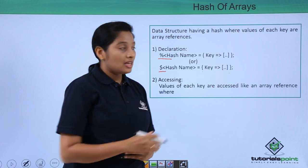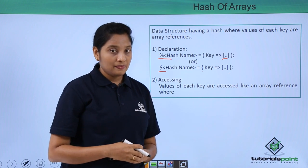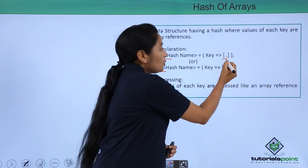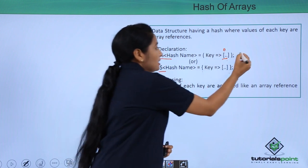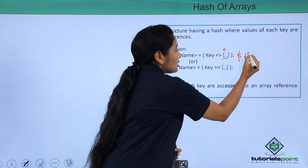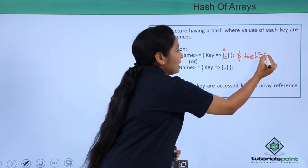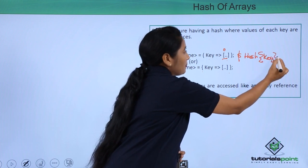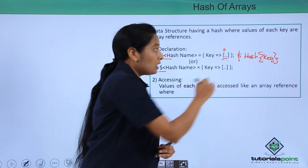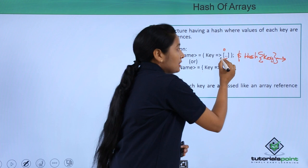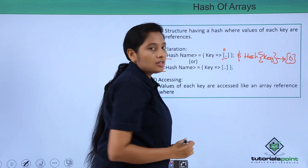To access the elements inside this array reference, which is a value in this hash — for example, to access the first element in this array reference — just write the hash name, then enclose the key in curly braces. As this array reference is starting with a square bracket, you have to use an arrow symbol, then give the index number 0.